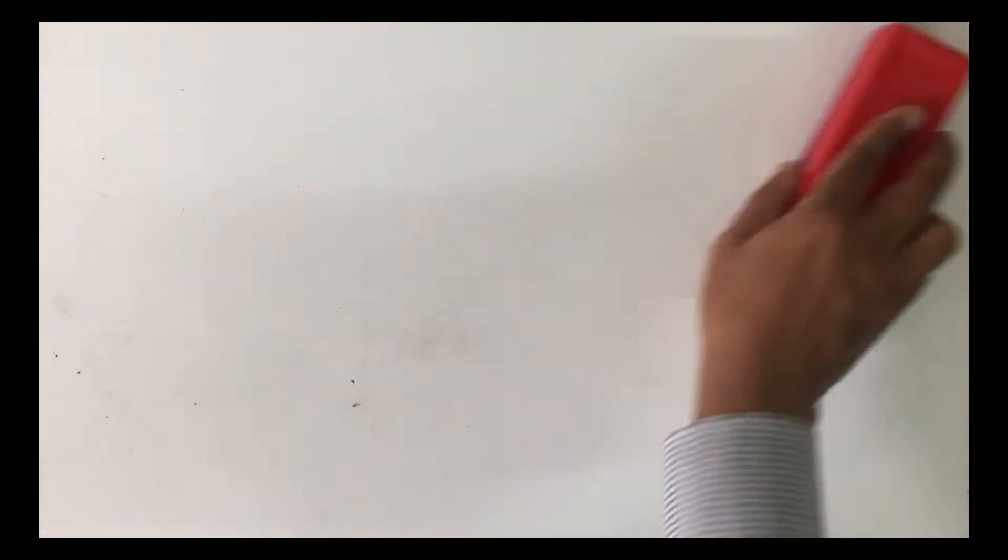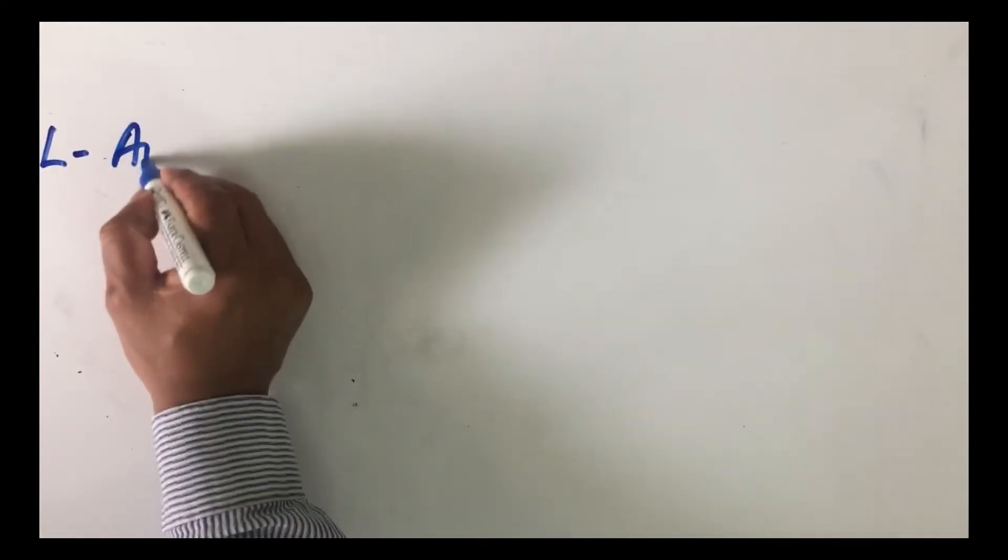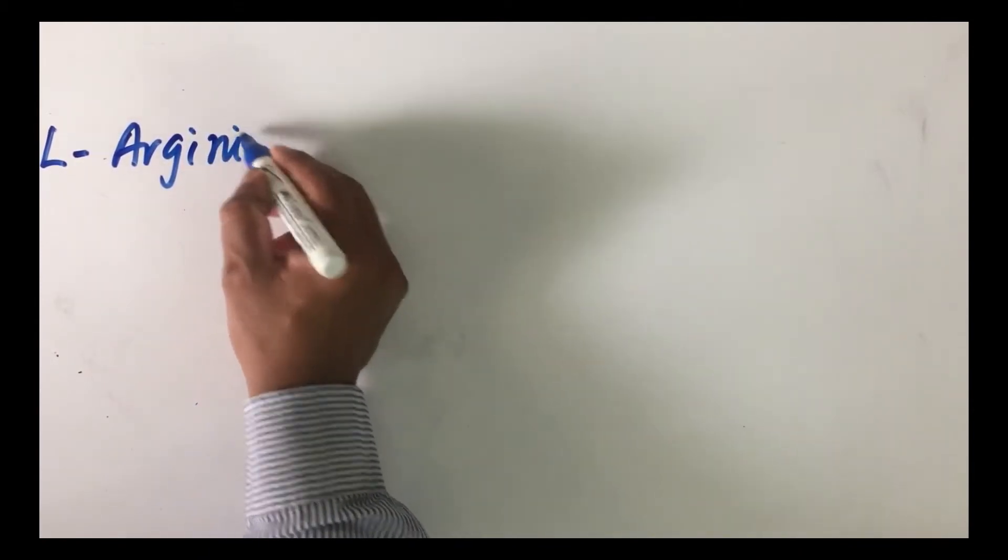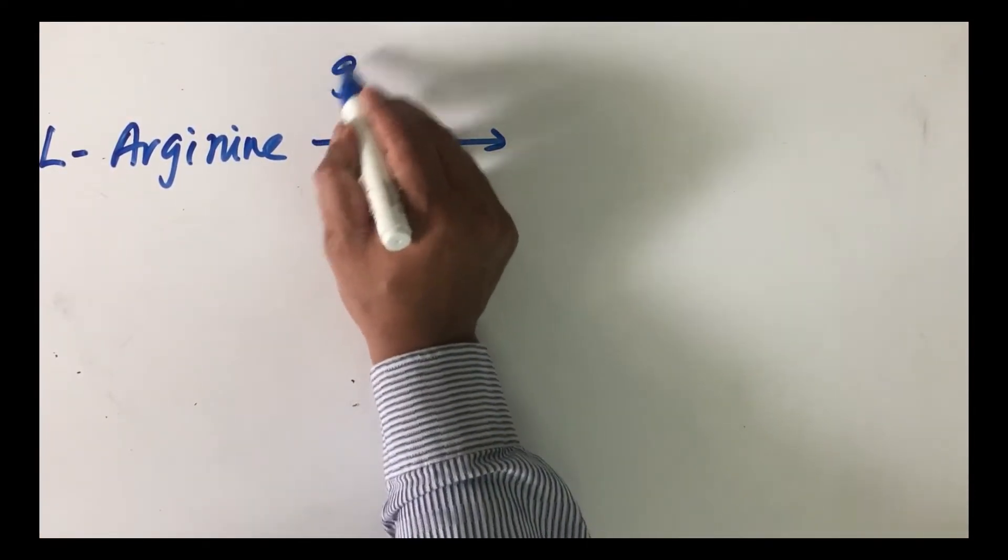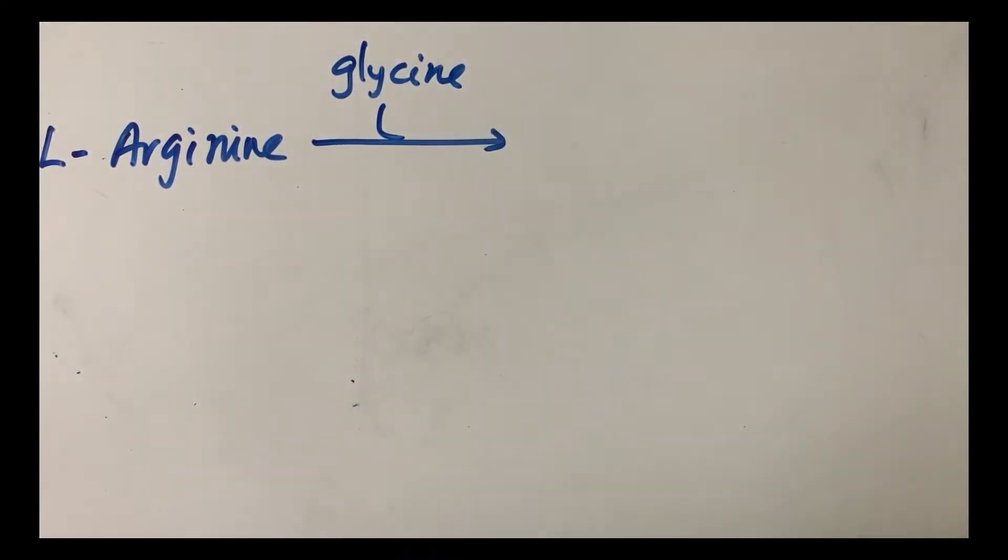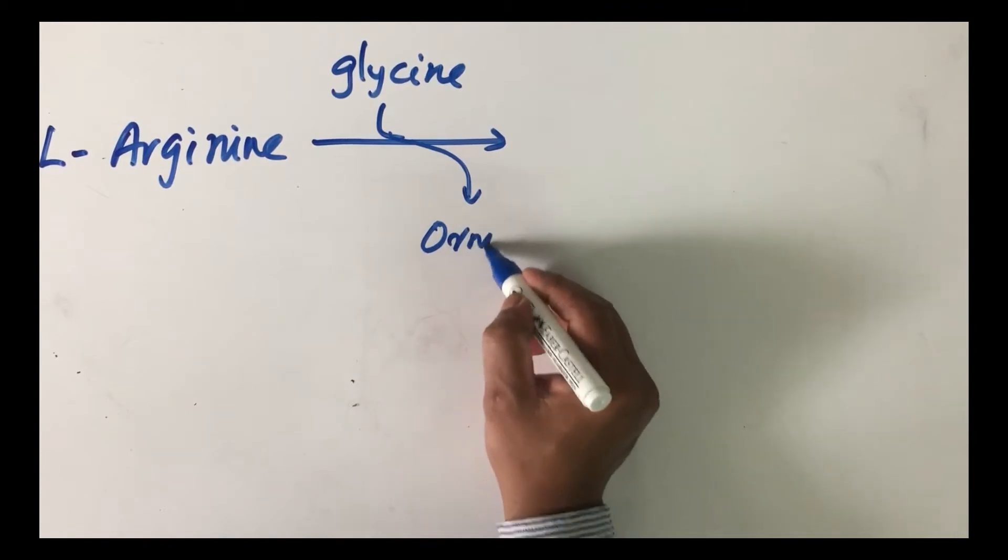We will write the steps first. It starts with arginine. Look at the number of amino acids that are taking place in this synthesis. Arginine is acted upon by glycine. Glycine is added to arginine and what happens is ornithine is removed.